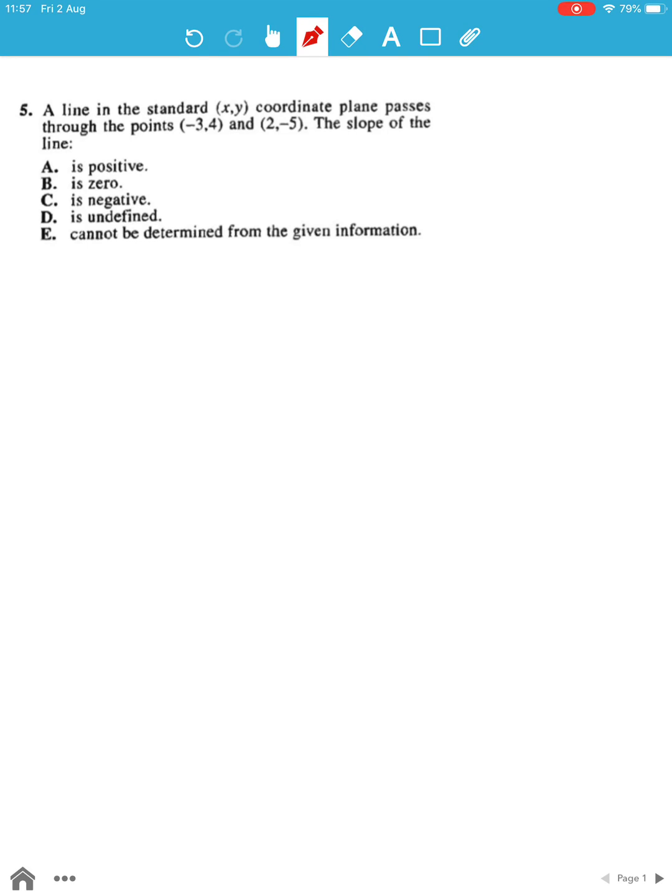For question number 5, we need to know that the gradient or the slope of any line is given by y2 minus y1 over x2 minus x1, where m represents the slope or the gradient.